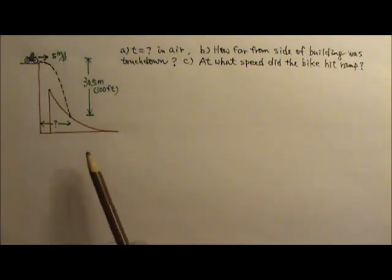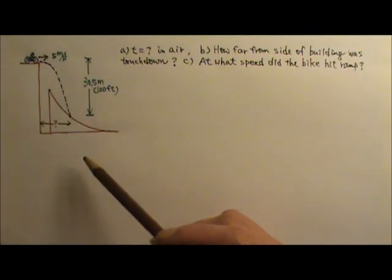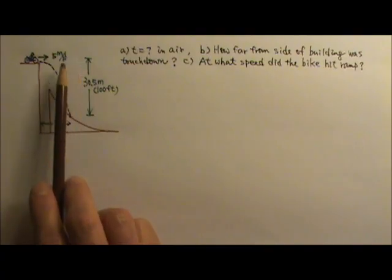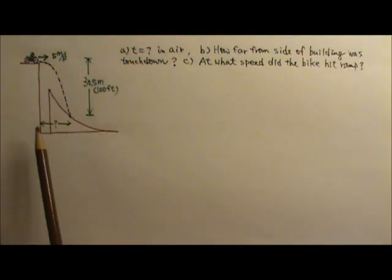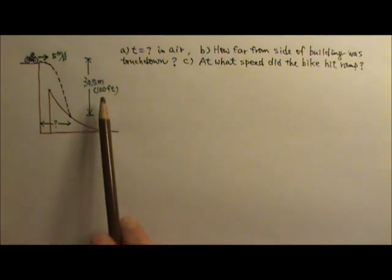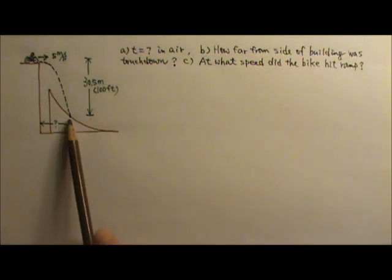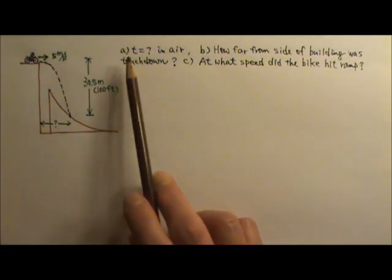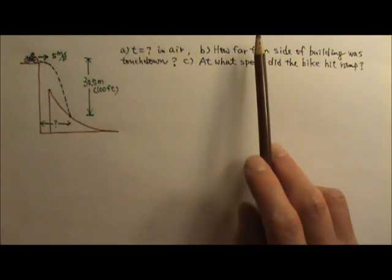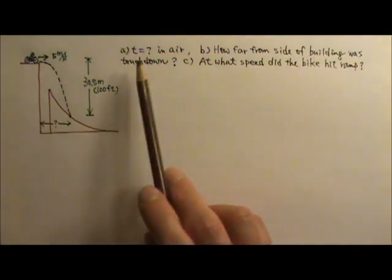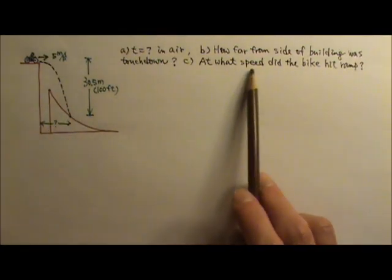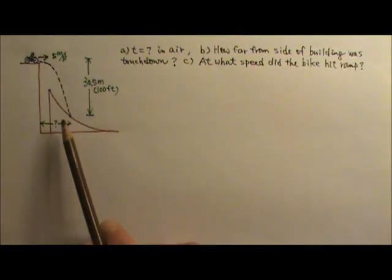Let's try this problem. In one of Robbie Madison's motorcycle stunts, he rode horizontally off the top of a building at 5 meters per second. After a 100 foot or 30.5 meter drop, he touched down on a ramp. How long was Robbie in the air? How far to the side of the building was the touchdown? And at what speed did the bike hit the ramp?